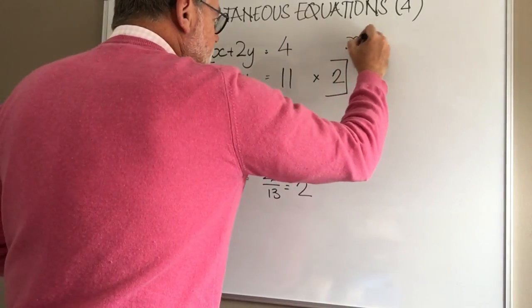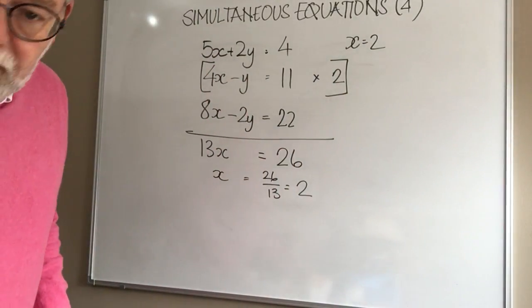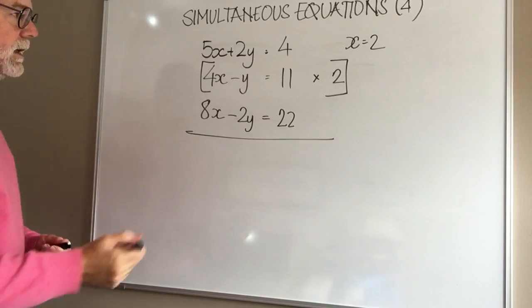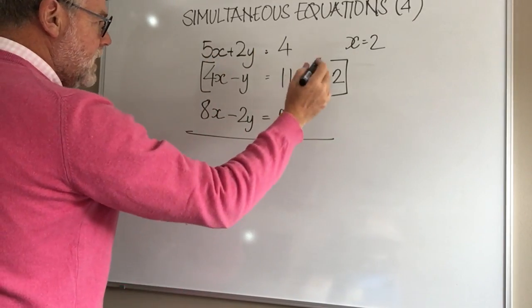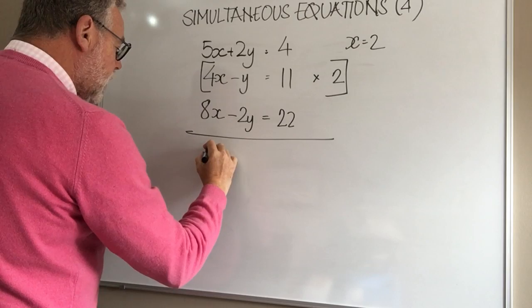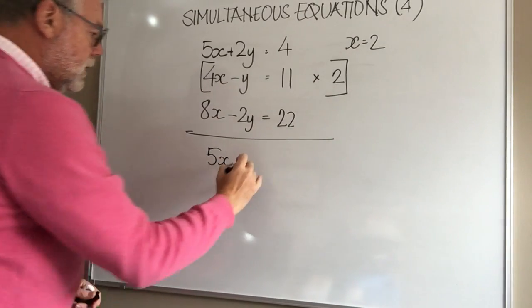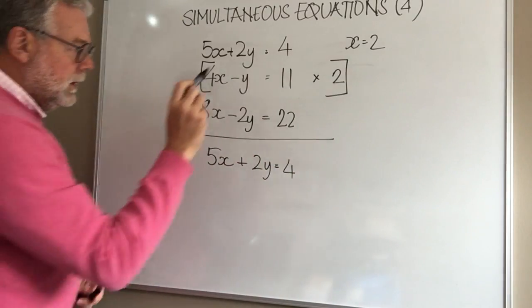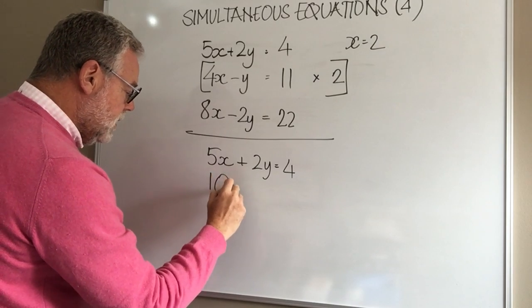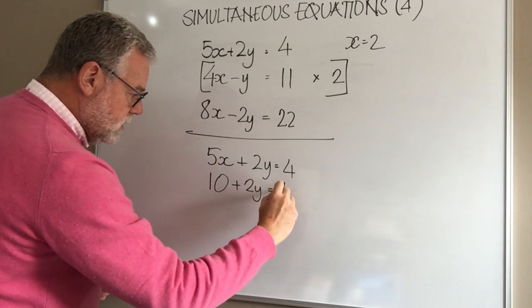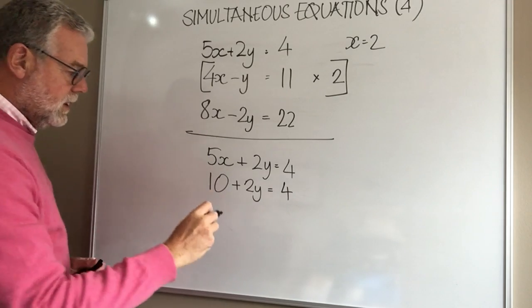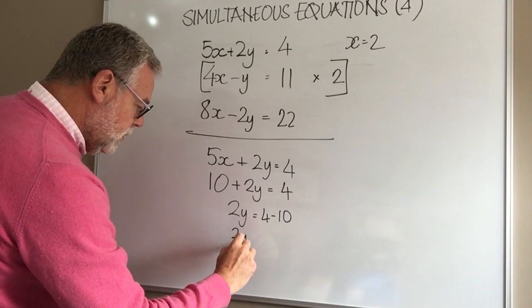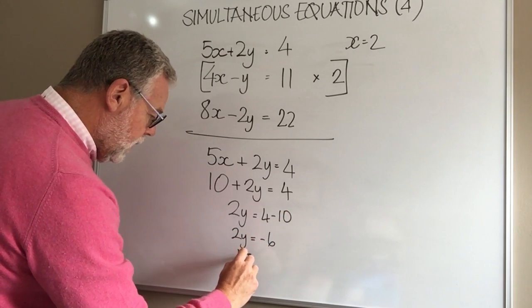And then well, once we've got the value of x we can then come back to our equations and choose one of them. Let's take 5x plus 2y equals 4. So we've got 5x plus 2y equals 4. Now we know x is 2 so therefore 10 plus 2y equals 4, let's change the side change the sign, so 2y equals 4 take away 10, 2y equals minus 6, y equals minus 6 divided by 2, so therefore y equals negative 3.